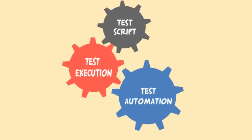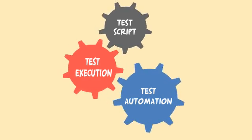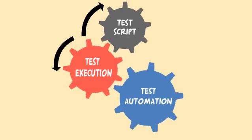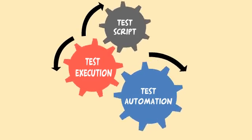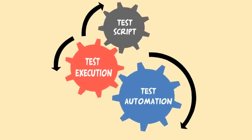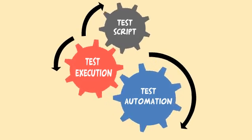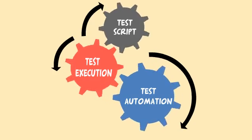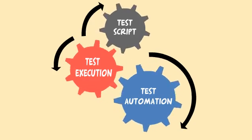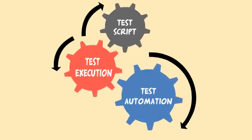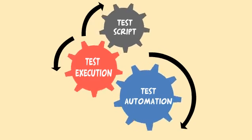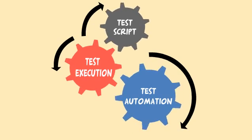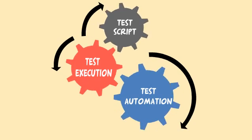In automation testing, the tester writes scripts and uses another software to test the software. This testing is used to rerun the test scenarios that were performed manually, quickly and repeatedly.